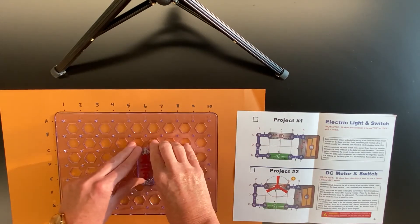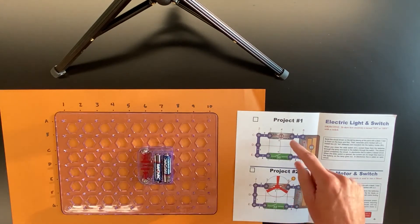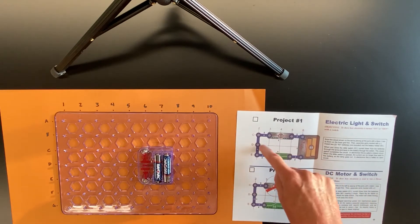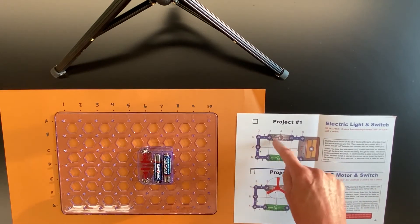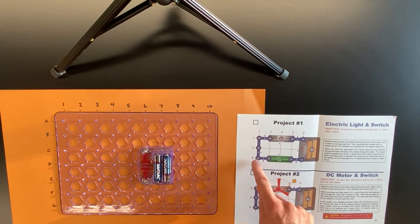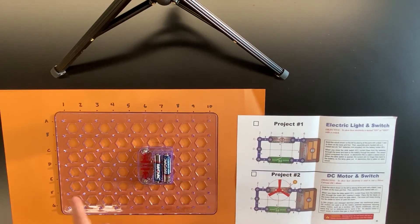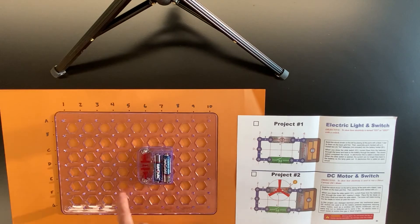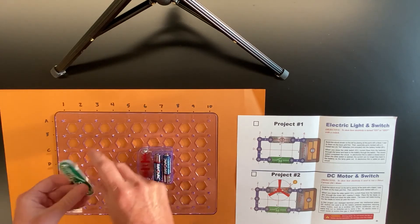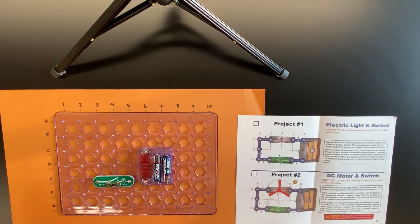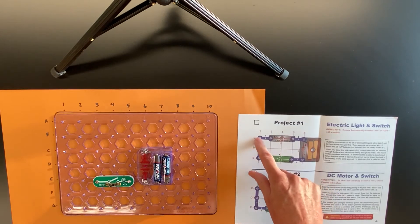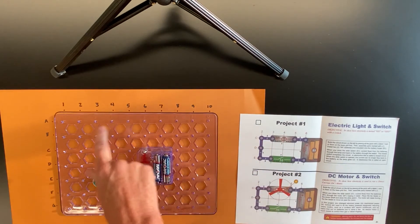The pieces with number ones next to them need to go down first. I'm going to put the switch at E3 through 5 and snap it here. The light goes at C3 through 5, right here.